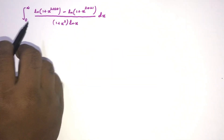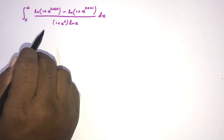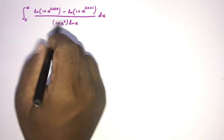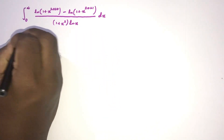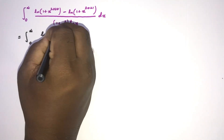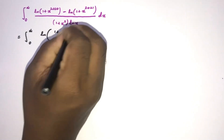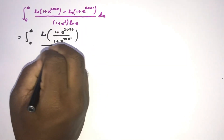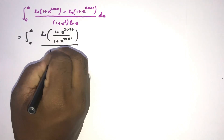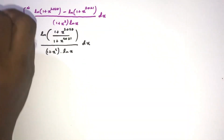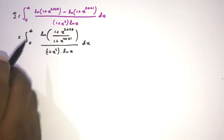Hello everyone. In this video we are going to solve this interesting advanced integral. In the numerator we have the natural log of one function minus the natural log of another function, so according to the property of natural log we can write the integral from 0 to infinity of the natural log of (1 + x^2020) over (1 + x^2021), all over (1 + x^2), times natural log of x, dx. Let's call this integral I.